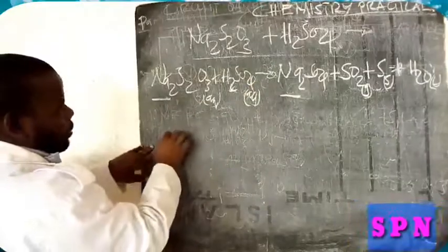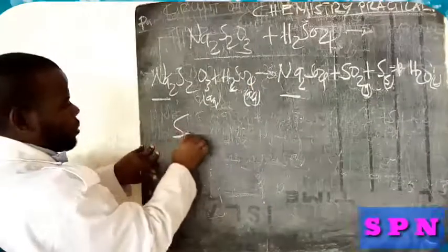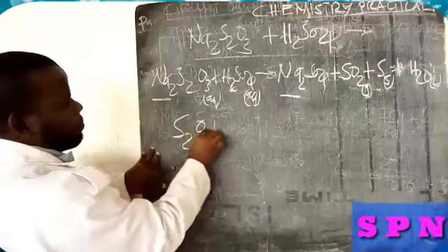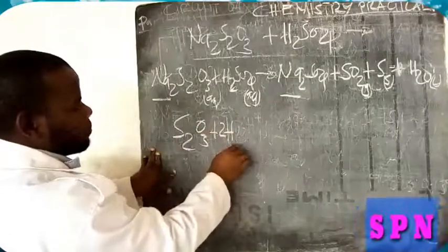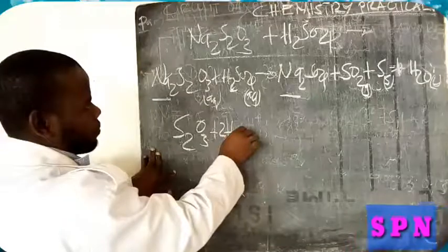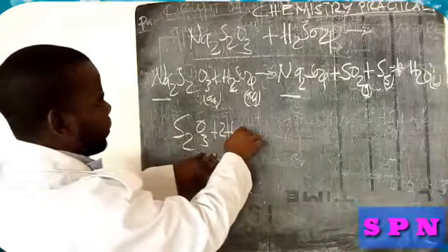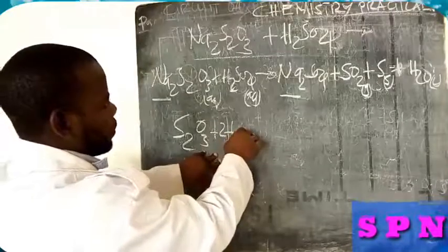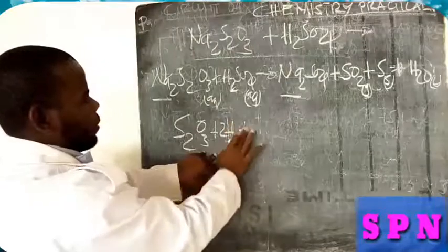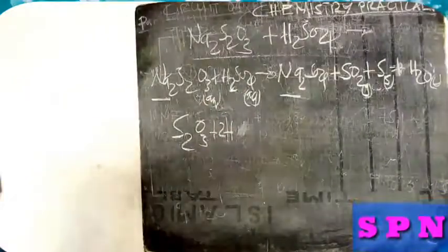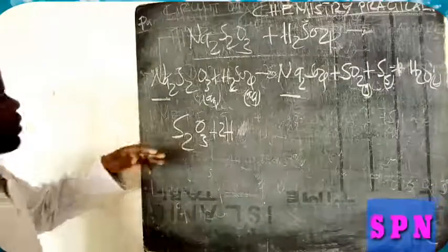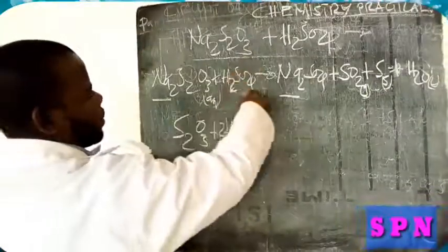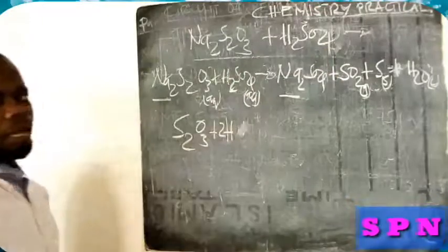So the ionic equation will be sodium thiosulfate plus hydrogen, then plus... I think it's that one. Because sulfur also, we cancel spectator ions.